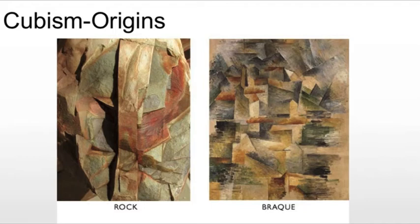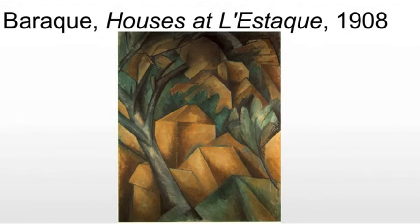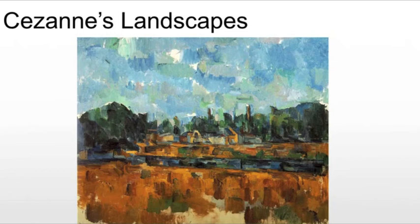Cubism will derive its name from remarks made by the painter Henri Matisse and the critic Louis Vauxcelles — who incidentally is also key to naming the Fauves — both of whom described Braque's painting as composed of cubes. In Braque's work, the volumes of the houses, the cylindrical forms of the trees, and the tan and green color scheme are reminiscent of a Cézanne landscape, which deeply inspired the Cubists in their first stage of development until 1909.